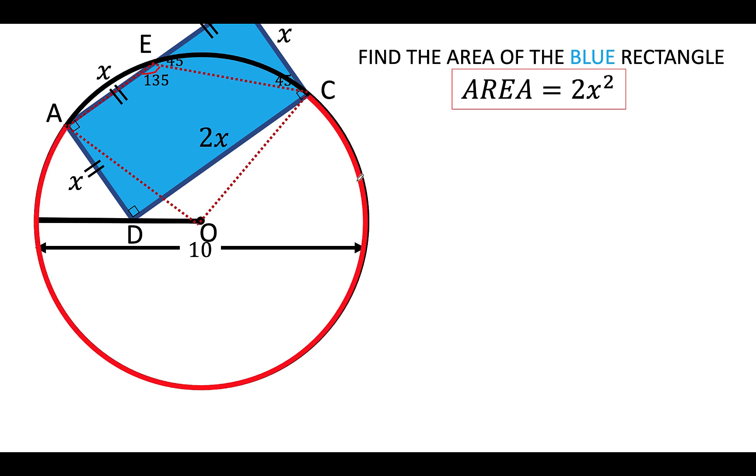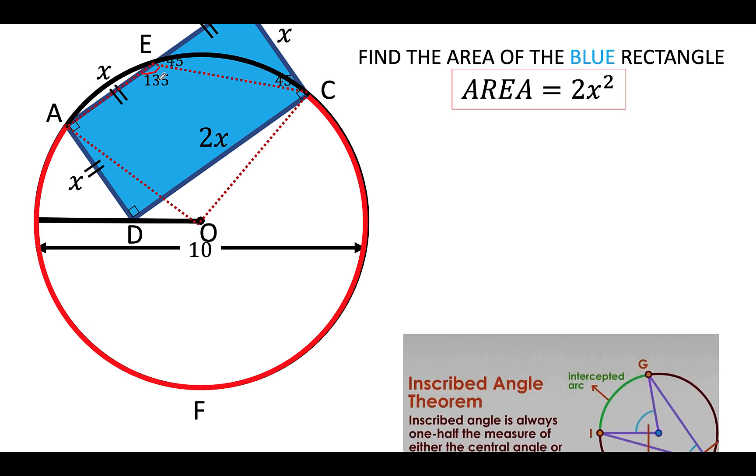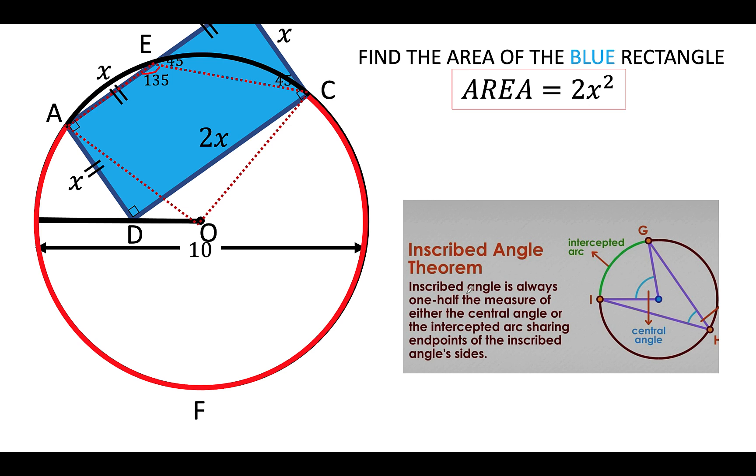Then, this red arc subtends the inscribed angle AEC with a measure of 135 degrees. And applying now the inscribed angle theorem, the inscribed angle is always one half the measure of either the central angle or the intercepted arc AFC in our case here. So that if this subtended angle is 135 degrees, then the arc it intercepted, major arc AFC,